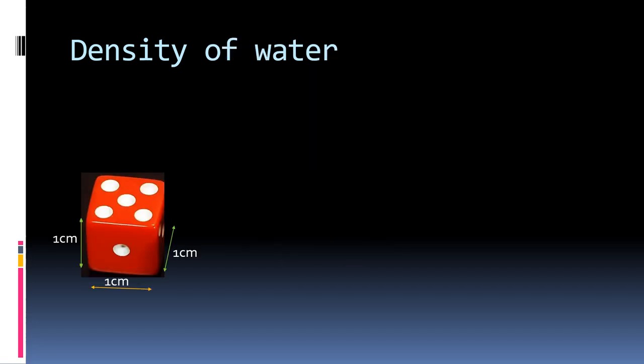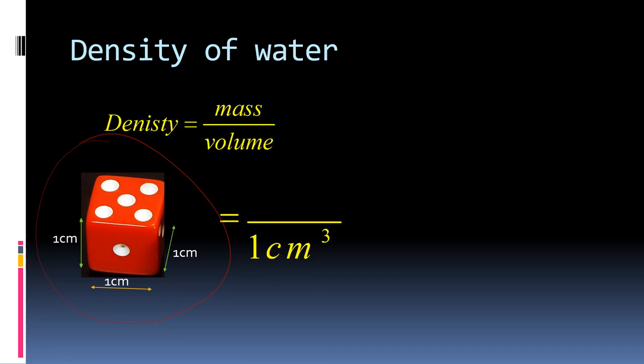Similarly, you can imagine the dice which we have seen earlier. A one centimeter dice will give you volume around one centimeter cube. So again, density is mass per unit volume and this is one centimeter cube.